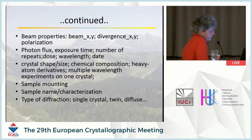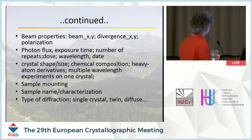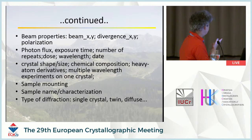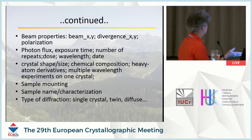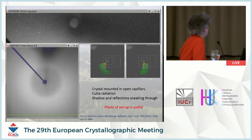There is additional information relating to the sample: crystal size and shape, chemical composition, heavy atom derivatives, use of multiple wavelengths that link datasets together from the same crystal, sample mounting, and identification or name of the sample — what John calls the chemistry of the sample. It would also be helpful if the researcher had already classified the data: single crystal, twin, or diffuse scattering observed — that would be very helpful when searching metadata.